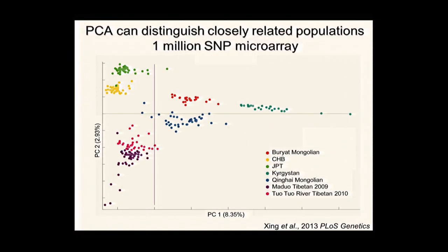In many cases, we can distinguish between fairly closely related populations. Looking at Tibetan populations, they speak different dialects that are largely discernible from one another on a principal components plot. Different Mongolian populations are also distinguishable. If we're looking for population stratification while doing an association study, this kind of display helps us detect stratification in populations, and then we can use the loadings on these axes to control for that stratification.